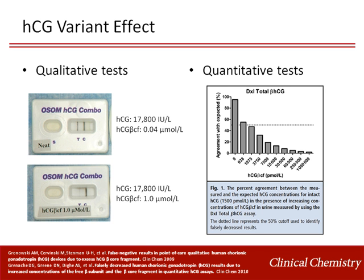If that specific HCG variant is present at a high enough concentration, it can saturate the antibody binding sites that recognize it, leading to impaired detection of HCG variants recognized by both antibodies. The HCG variant effect has been described in both qualitative and quantitative HCG tests, and both reports have only identified this effect due to elevated concentrations of the beta core fragment of HCG. As this variant is only detected in the urine, the variant effect is more of a clinical concern with qualitative urine tests. As shown on the left, the positive results of qualitative urine HCG tests were greatly diminished in the presence of elevated concentrations of the beta core fragment.